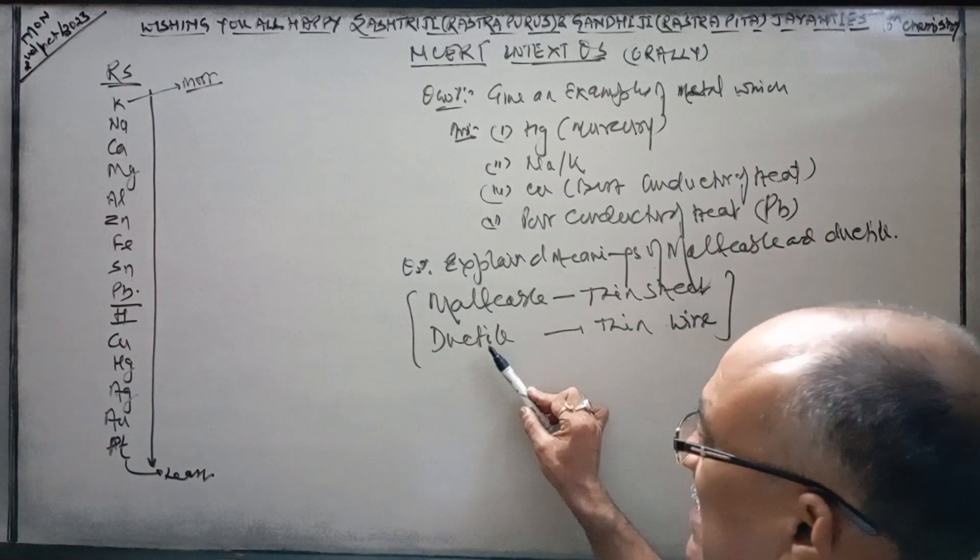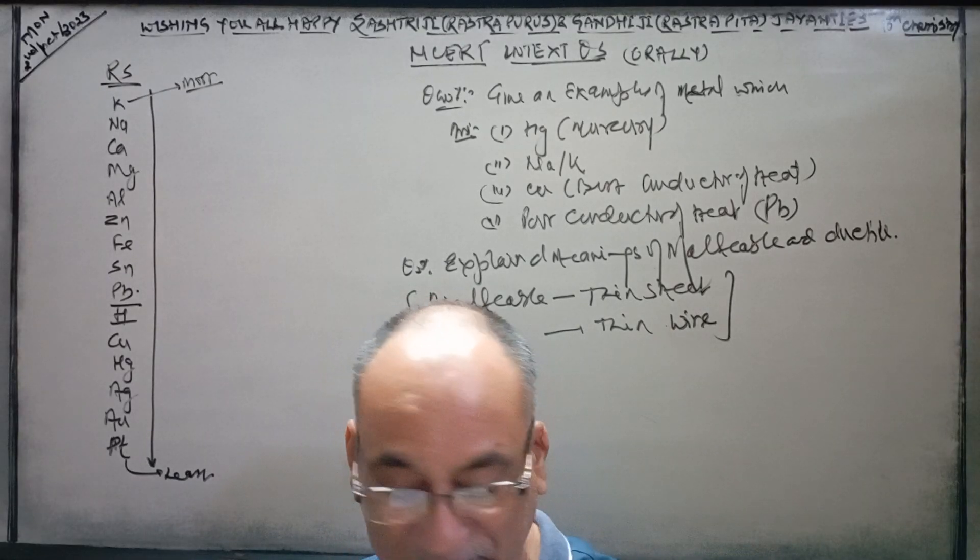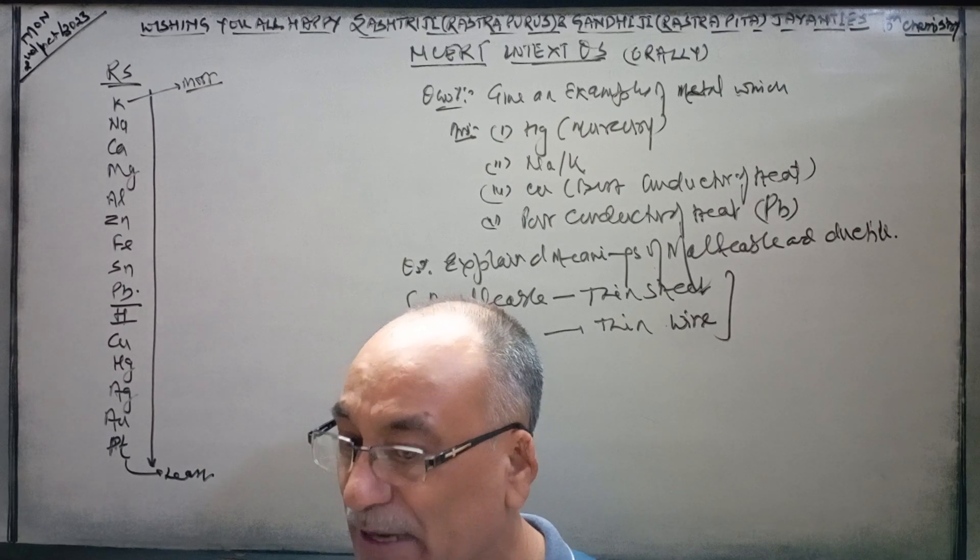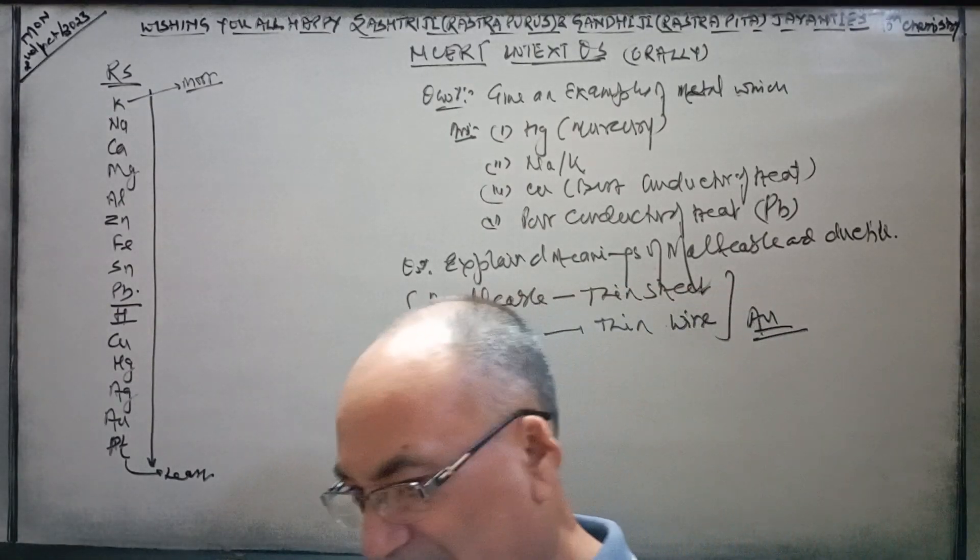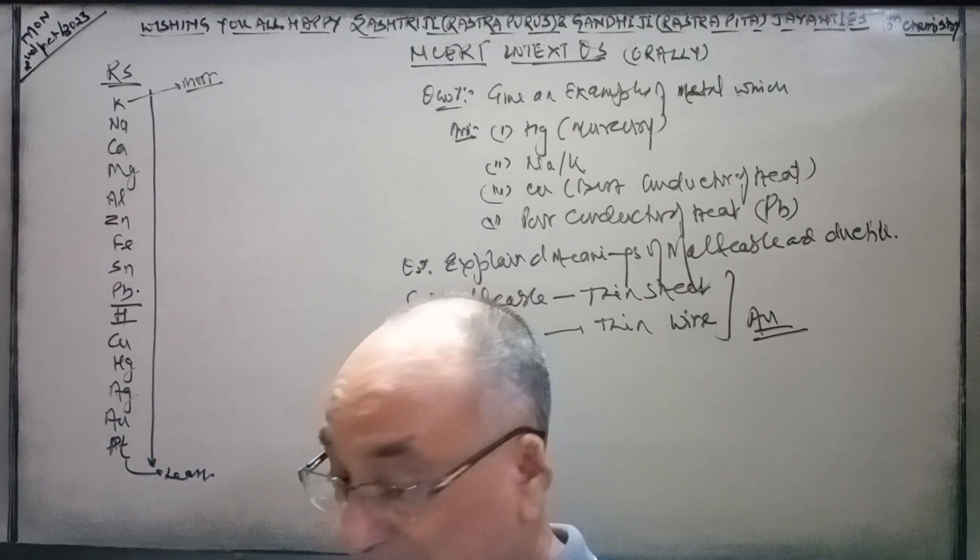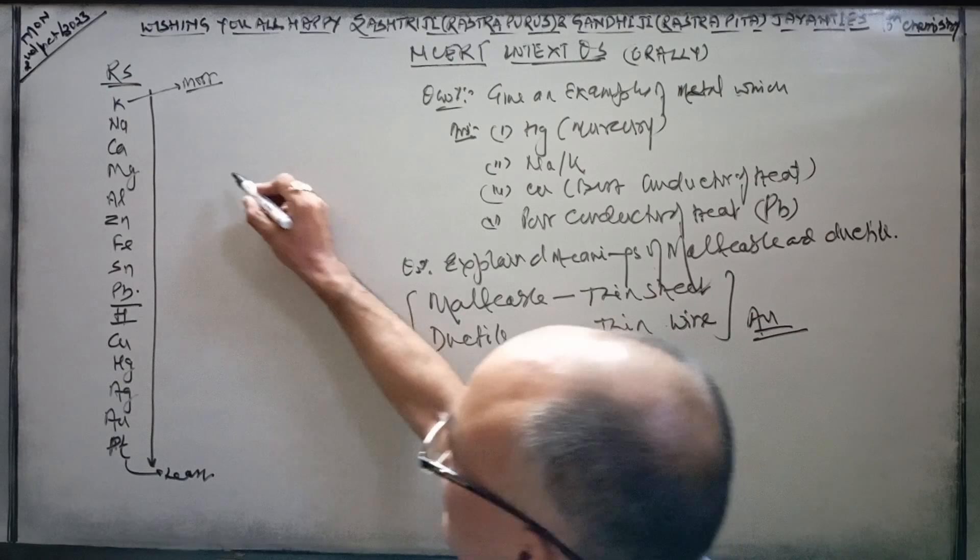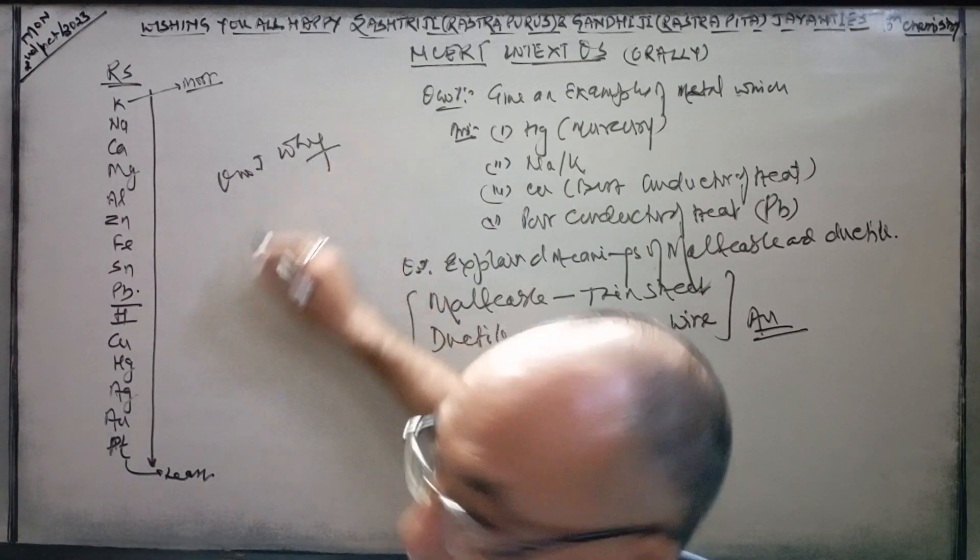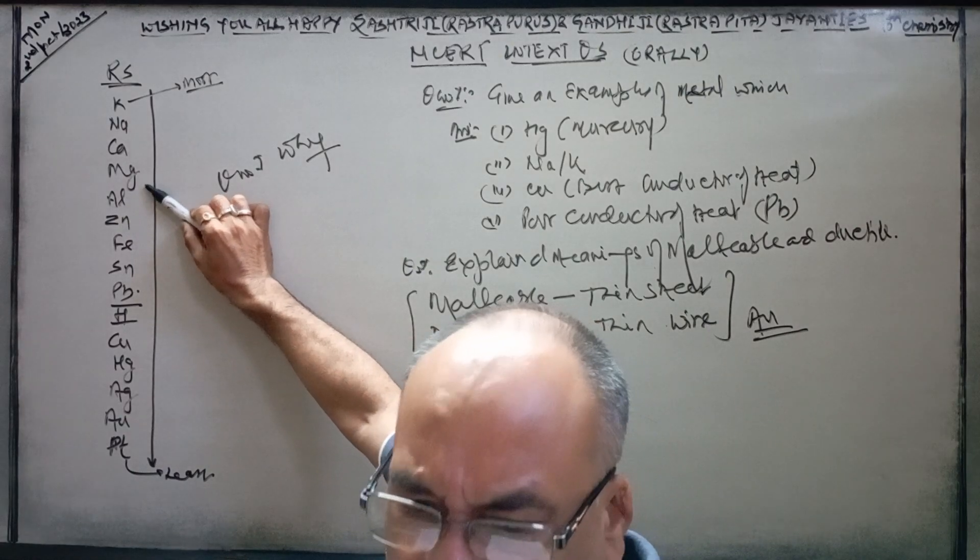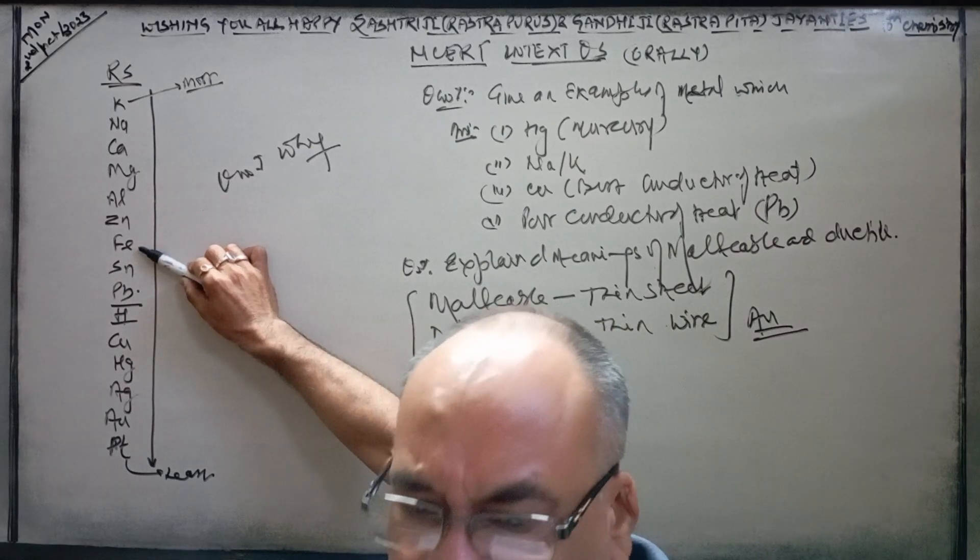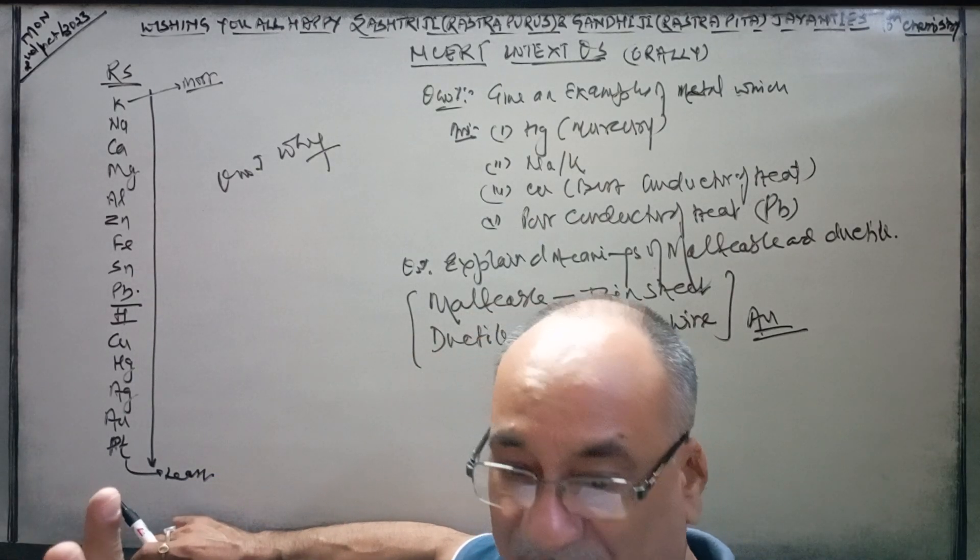And ductile means thin long wire. Keep these two things in mind. Malleable nature means when a substance is beaten by the help of a hammer it forms thin sheets. That's called malleable and its property is known as malleability. Most metals are malleable in nature. When a substance is beaten and drawn into thin wires, it's called ductile. Gold is the most ductile metal.